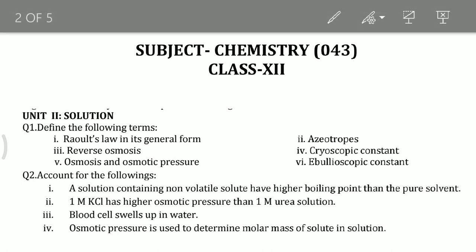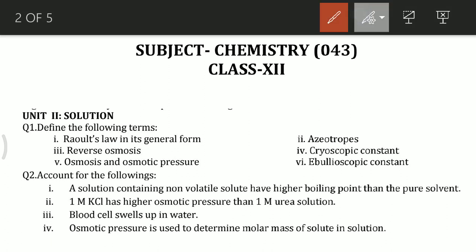The first question type is definitions. First is Raoult's law in its general form. Next is what are azeotropes. Third is reverse osmosis. Fourth is the cryoscopic constant. Fifth is osmosis and osmotic pressure. Sixth is the ebullioscopic constant. These are the definitions along with their particular formulas which you have to write.